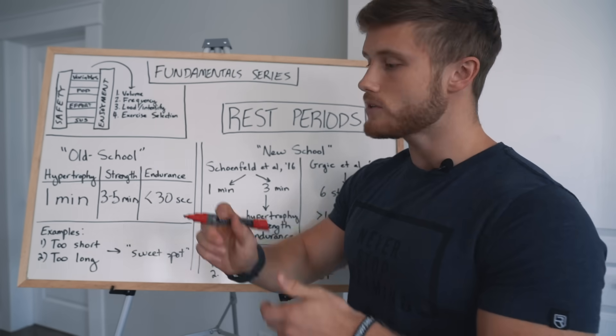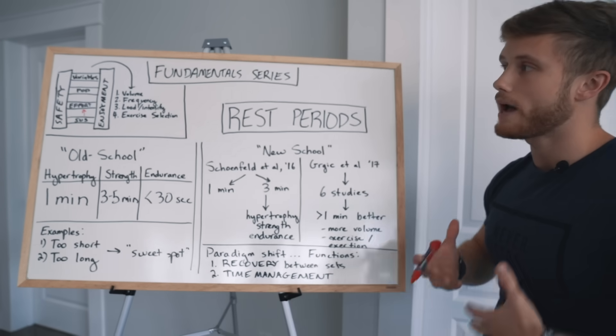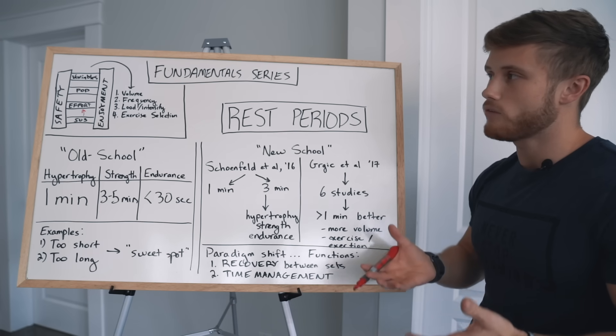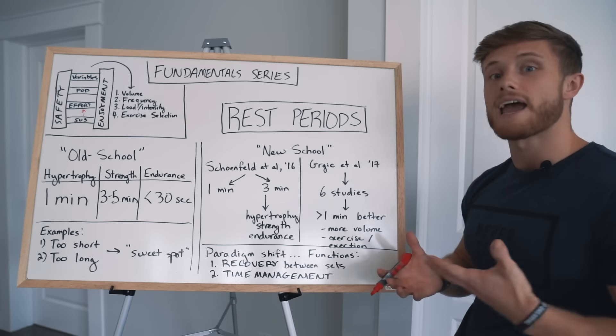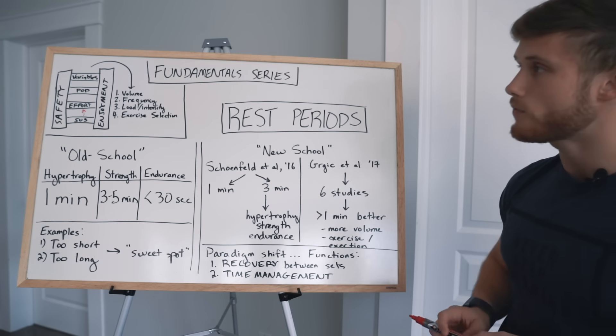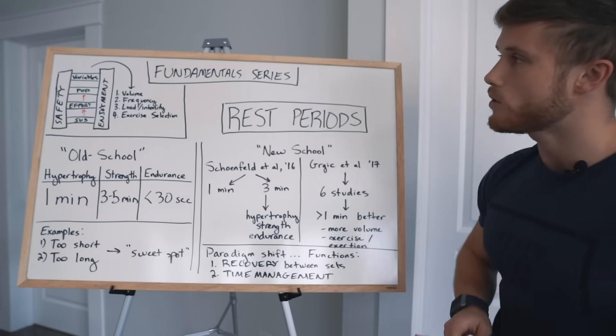Moving up from there, we have effort. So once you have a routine that's safe and enjoyable, now it's time to apply an appropriate amount of effort. You need to be exerting yourself enough to see some growth, but that doesn't mean that you're going to be taking every set to failure. You need to be within a reasonable proximity to failure. Once you apply some effort, it's time to apply progressive overload.